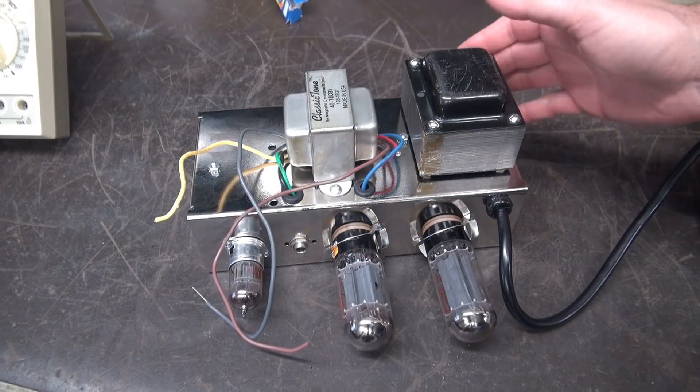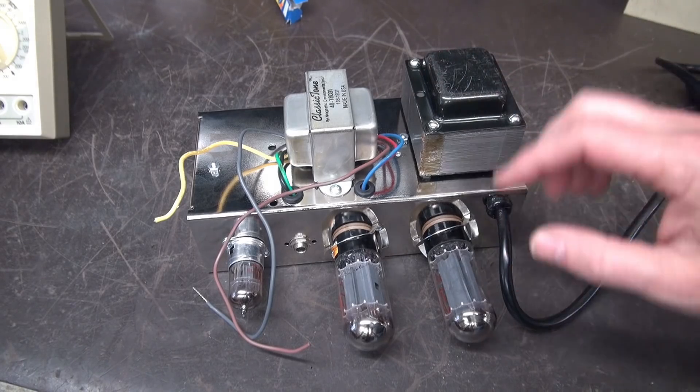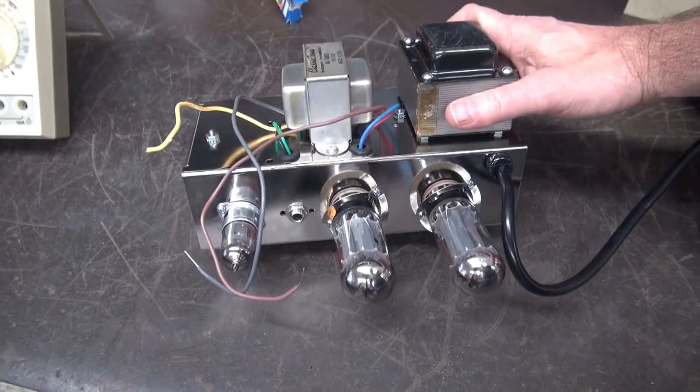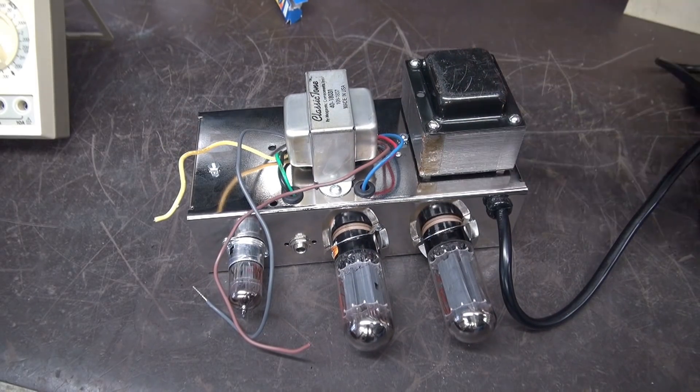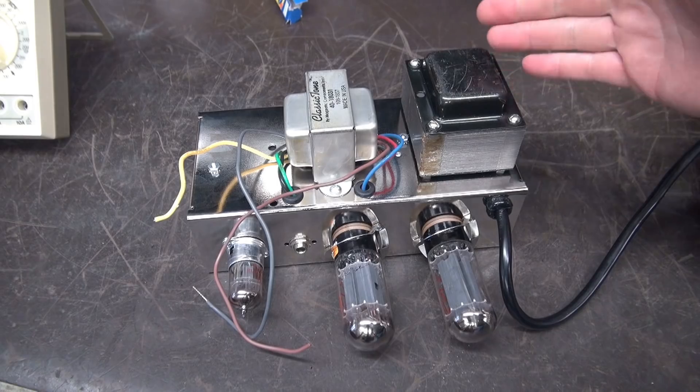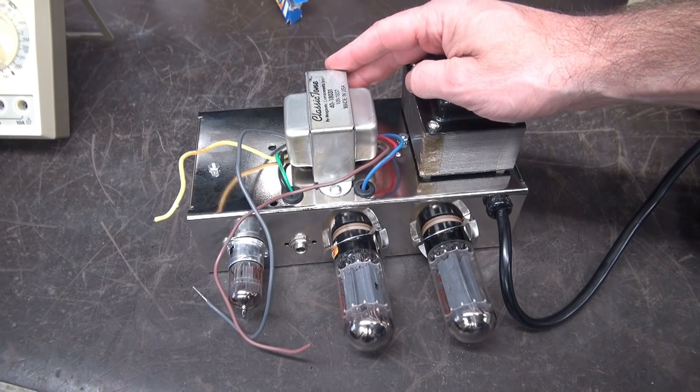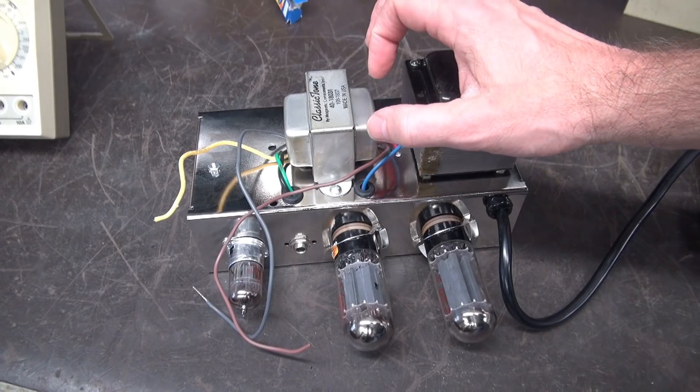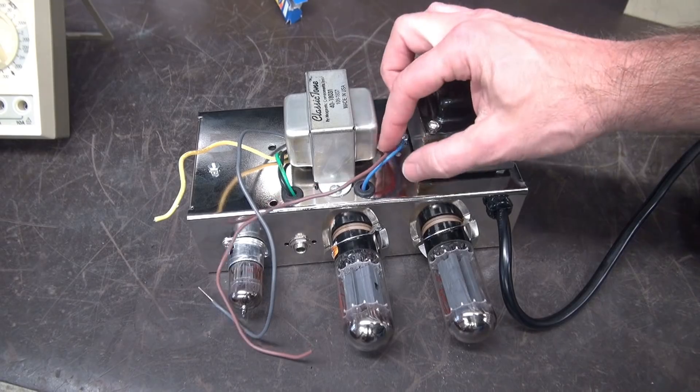Tubes are installed. I'm getting ready to power this thing up for an initial check. And yep, it's got my favorite JJ tubes in it. So I'll keep a careful eye on them, make sure they're going to cooperate with me. But the other thing that was kind of odd is I noticed this gigantic output transformer.